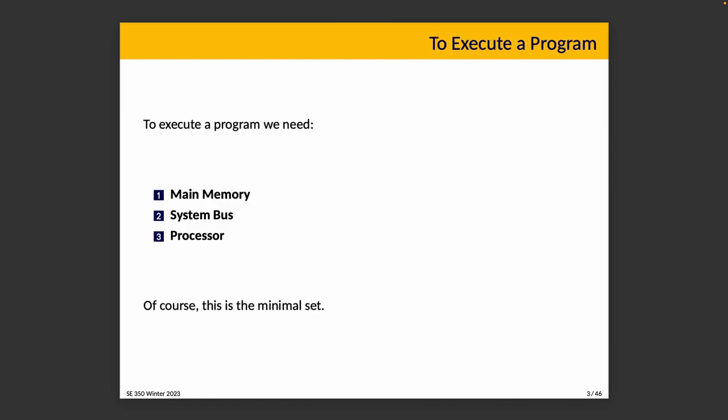To execute a program we need a few things. We need main memory — a place where instructions and data are stored. We need a bus: the system bus is the way for instructions and data to travel between memory and the processor. And then the processor is that critical element of the system that actually executes the instructions. This is a minimal set; to execute a program, at a minimum you need these three things.